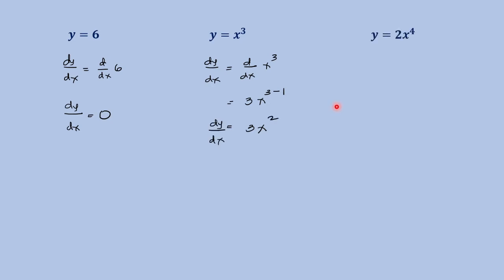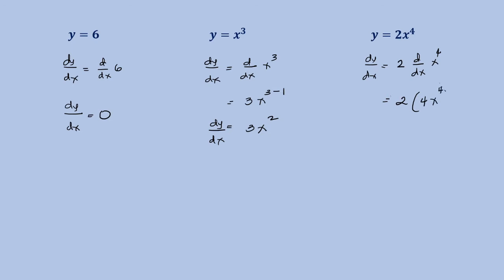This is an example for us to apply the constant multiple rule. For this case, we would like to get the derivative of the given function. By the constant multiple rule, we just have 2 times the derivative of x raised to 4. By the power rule, that is 2 times 4x raised to 4 minus 1, which gives us 8x cubed.